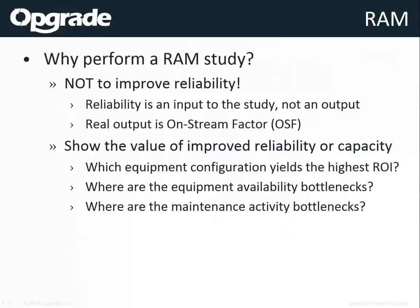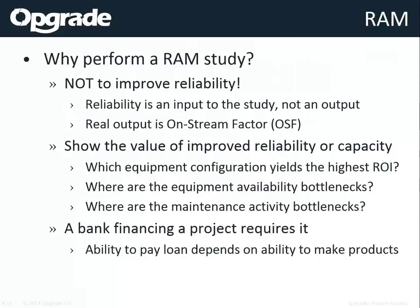Another reason RAM studies get done is that a bank or project financier will come in and say you need to do a RAM study. The bank says you're going to produce at 95% — prove it. I hate doing it this way, though, because we produce a number like 95.2365432% and it is never exactly that number — that is hocus pocus.